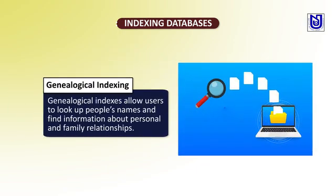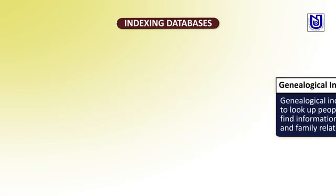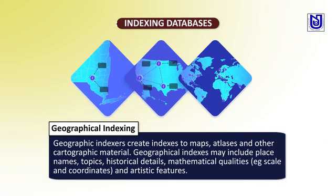Genealogical indexing allows users to look up people's names, personal and family relationships. Geographical indexing creates indexes to maps, atlases, and other cartographic materials. Geographical indexes may include places, names, topics, historical details, mathematical qualities such as scale, coordinates, and artistic features.